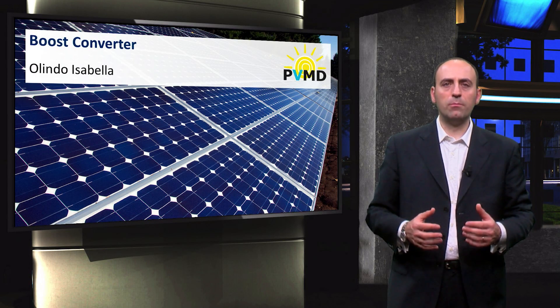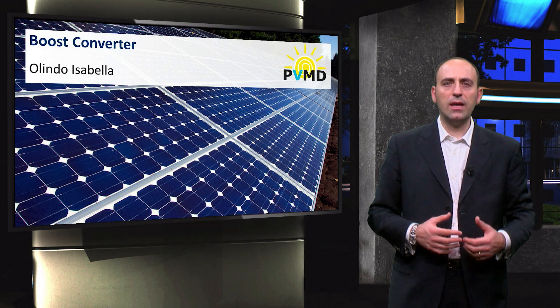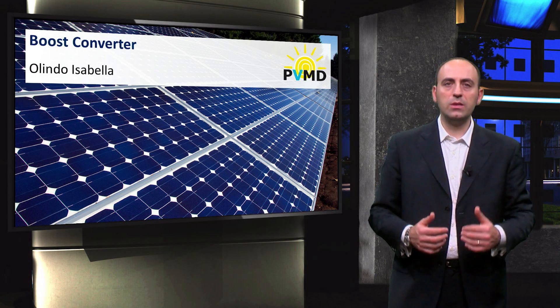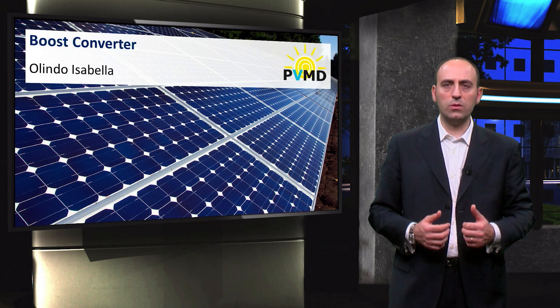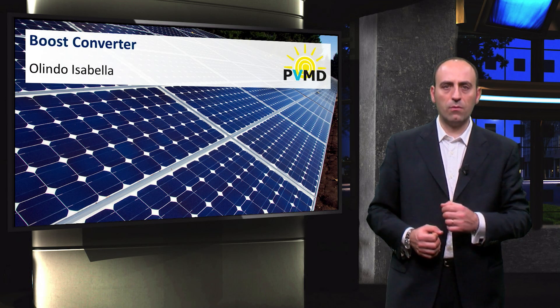In the previous video, we saw that the buck converter can decrease the voltage coming from the PV side. Now, on the contrary, we will see how to increase the input DC voltage by means of the boost converter, also called the step-up converter.